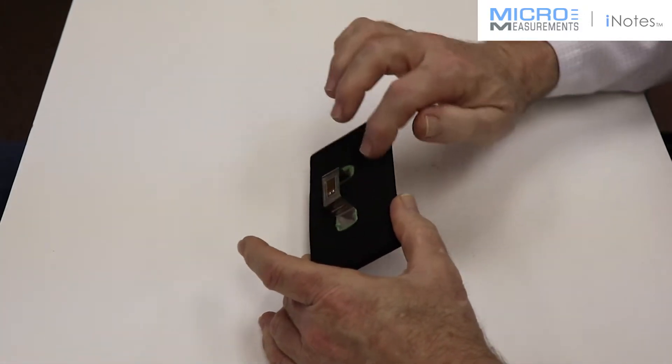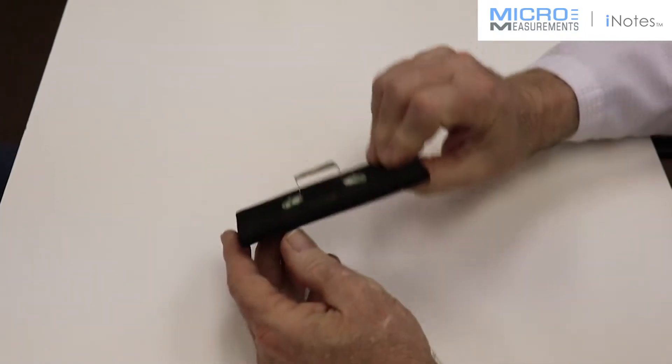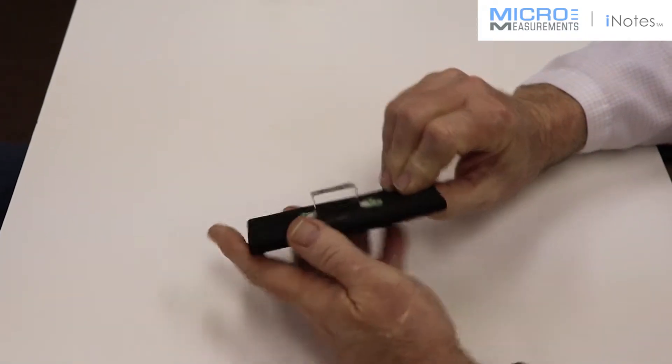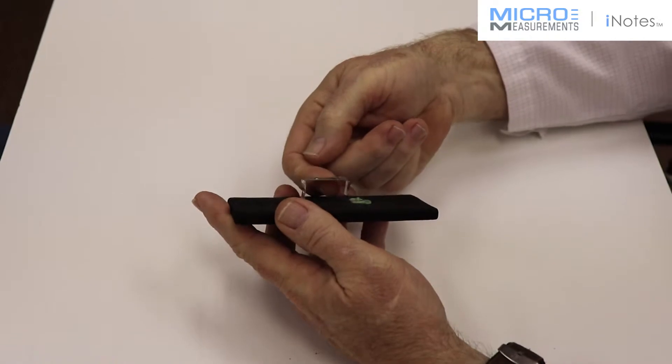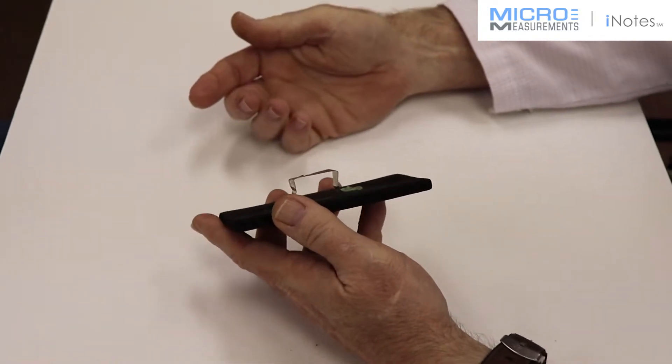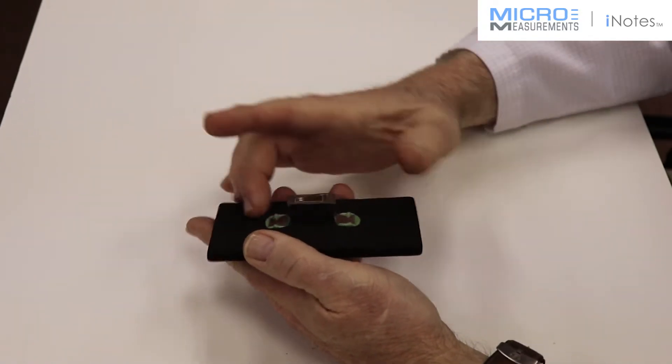This is basically either an omega shape or a hatch section like this. You can put a gauge on the top and a gauge on the bottom in a half bridge configuration, and as you separate the two legs,